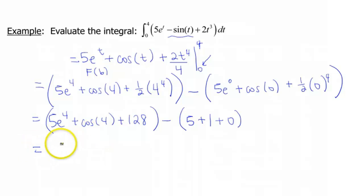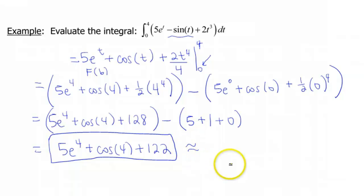So then when I go to combine some of my like terms here, so I have 5e to the fourth plus cosine of 4. And then I'm gonna have 128 minus 6, so I believe that gives me a grand total of 122. So this would be my exact value for this integral. And if you wanna crunch that out on your calculator, that gave me approximately 394.34.